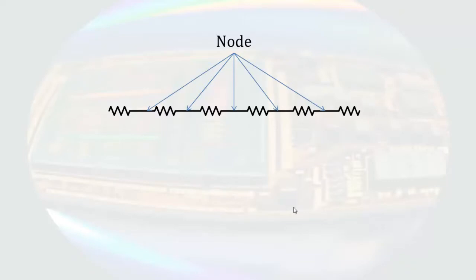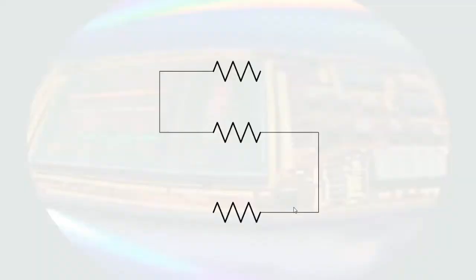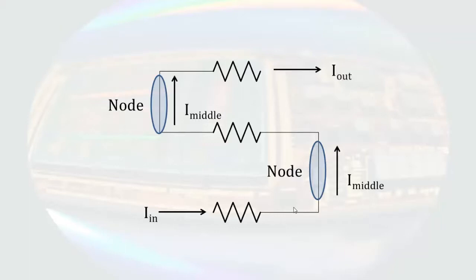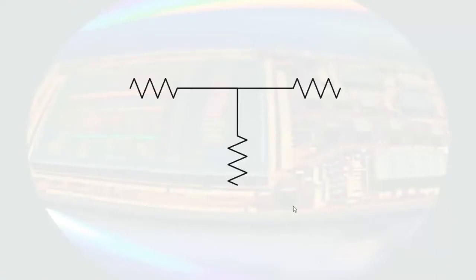They all share a single node between each pair and current that enters the combination leaves the combination. Some confusion occurs when synonyms are introduced into the definition — for example, series does not mean in a line. If we look at this arrangement of resistors, we see each pair shares a node. If current enters through the bottom resistor, it passes through the connecting wire, through the next resistor, and out the top resistor. These three resistors are in series even though they are not in a line.